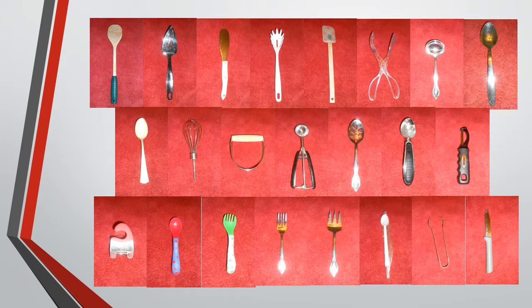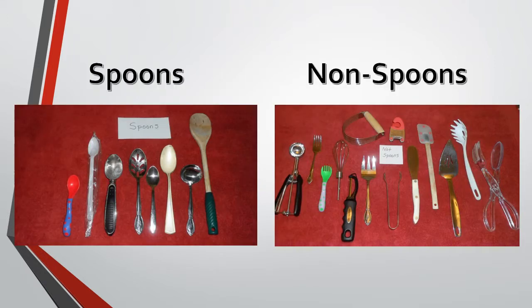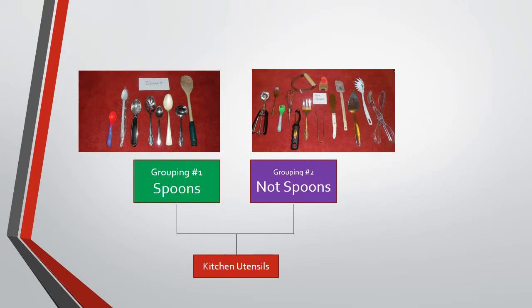Provide each group of students with a variety of kitchen utensils like these. It is important that each group have the same utensils. Instruct your students to discuss the characteristics of the kitchen utensils and then sort them into groups based on any characteristic they choose. This is one of many possibilities students may come up with. Once students have sorted the utensils into two categories, instruct each group to begin drawing a cladogram on a large sheet of paper. Instead of the pictures shown here, your students could list the utensils in each group.